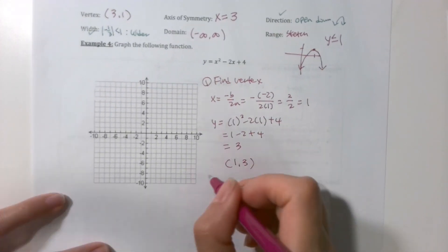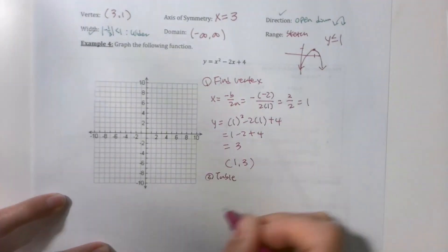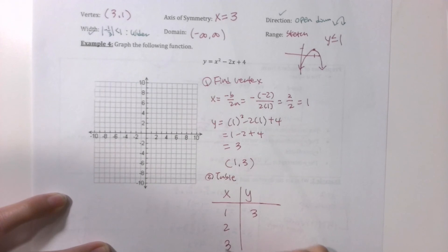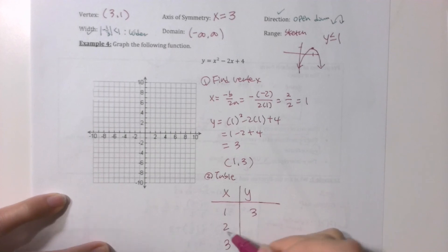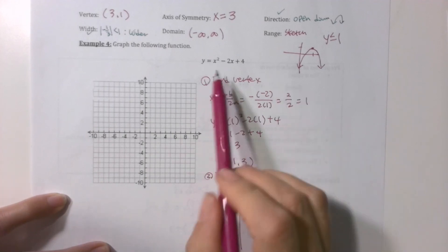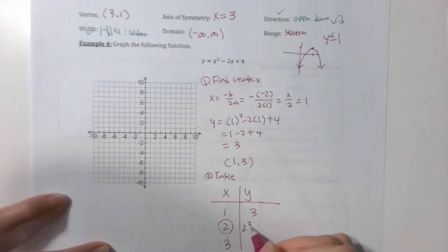All right. And then make a table. So it's really similar to what we did in the last class. X and y. Vertex is 1, 3. You do 2 and 3 and then find out the y value. And you're going to use symmetry to find the other half. So take that 2. Plug it into the x. 2² - 2(2) + 4 is 4 - 4 + 4. So 2 comma 4. Same thing. Plug 3 into the x. 9 - 6 is 3 + 4 is 7. And now you plug these points in.